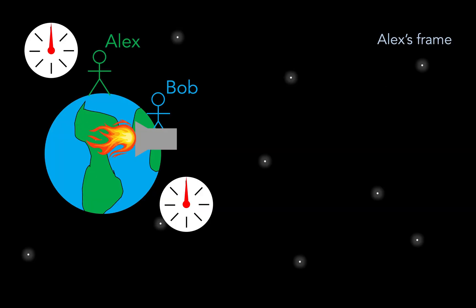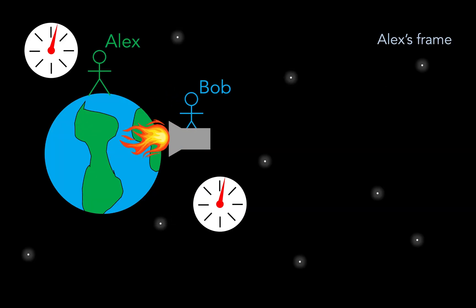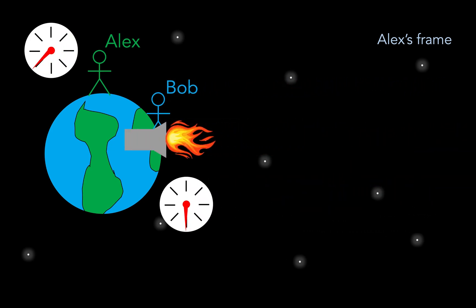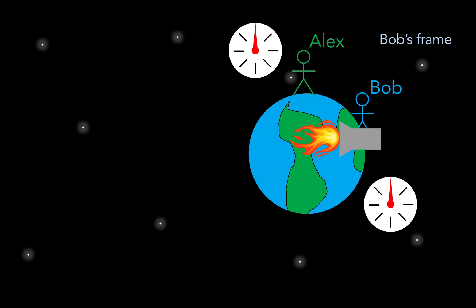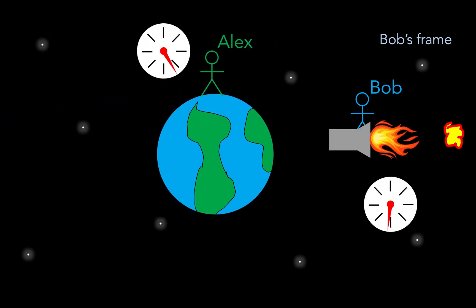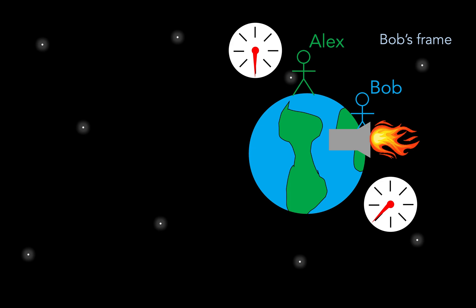So in Alex's frame, we can imagine that Bob's ship is turned around by some physical mechanism, like the ejection of rocket fuel. So in this picture, momentum is conserved because Bob's turnaround is compensated for by the momentum of the rocket fuel. However, in Bob's frame, not only is the rocket fuel unaccounted for, but the Earth just randomly changes direction without the application of any real force. So clearly, momentum is not conserved, and we know that Bob's frame is an accelerated frame.